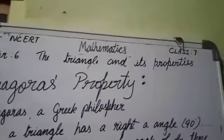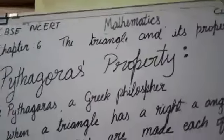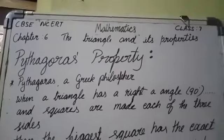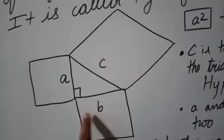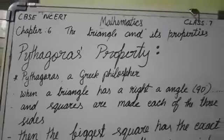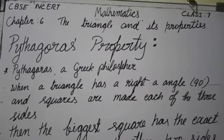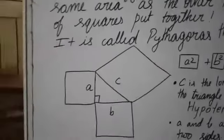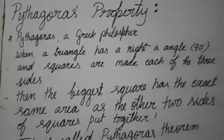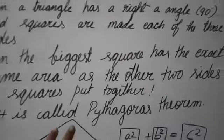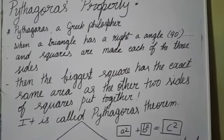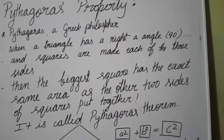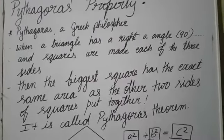When a triangle has a right angle, and squares are made on each of the three sides, then the biggest square has the exact same area as the other two squares put together. If we put together these two sides, then it will be equal to the third side. This is called the Pythagoras theorem.